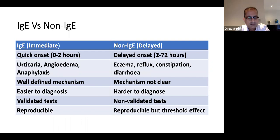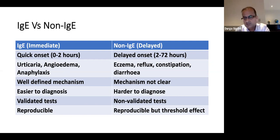IgE is immediate type of allergy and non-IgE is a delayed type. Immediate type means when you're exposed to the food protein, the reaction occurs immediately — most of the time within half an hour, but it can happen within two hours. In delayed type of reaction, we don't get an immediate reaction, but the reaction can happen after hours or even days, up to 72 hours.